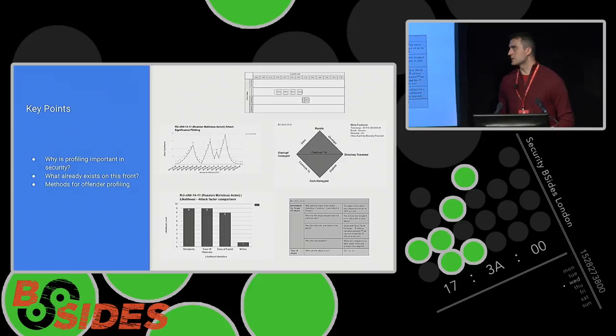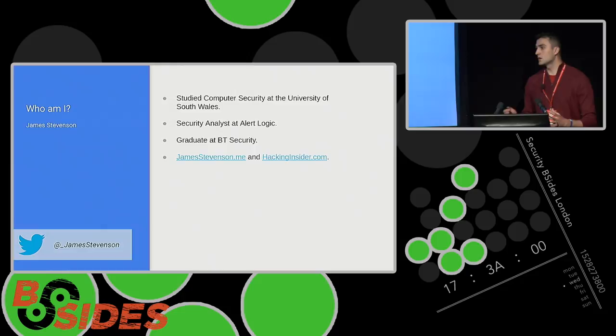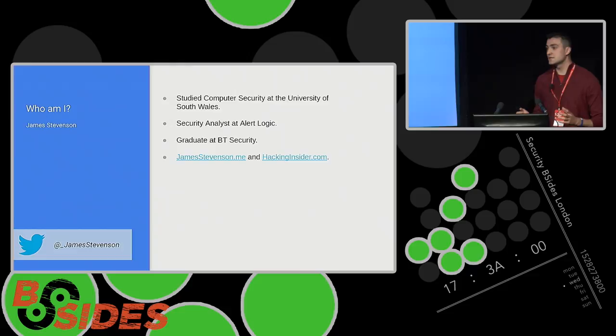Before I begin, who am I? My name is James Stevenson. This time last year I was a student at the University of South Wales studying computer security. Before that I was an intern at Elite Logic, a cloud security company, and these days I'm a graduate in BT Security. I've also run several websites — JamesStevenson.me and hackinginsider.com — and I'm also on Twitter at underscore James Stevenson.